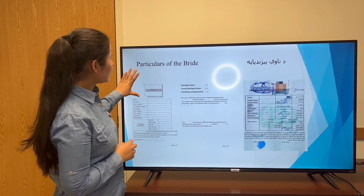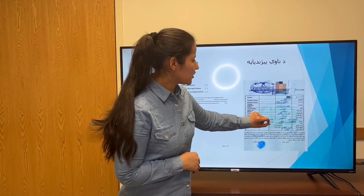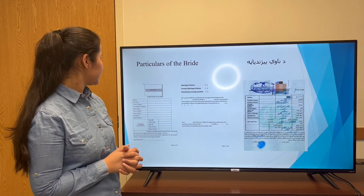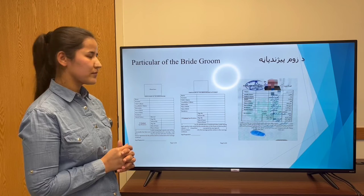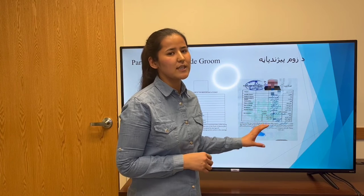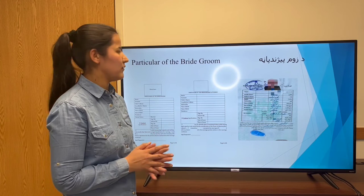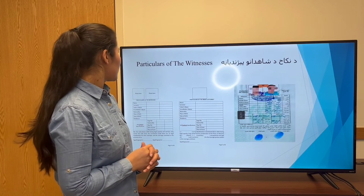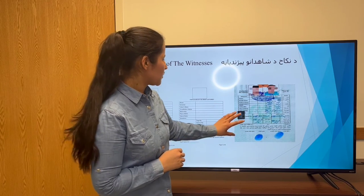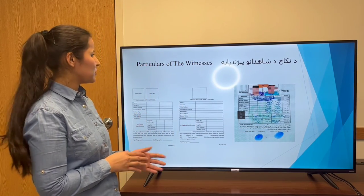Particulars of the bride: all information of the bride is mentioned here and the translator can translate that from Persian to English in the format we have. Particulars of the bridegroom: all the bridegroom information should be translated from Persian to English in the format we have. Particulars of the witnesses: we have two witnesses, and the translator should translate all their information from Persian to English in the format we have.